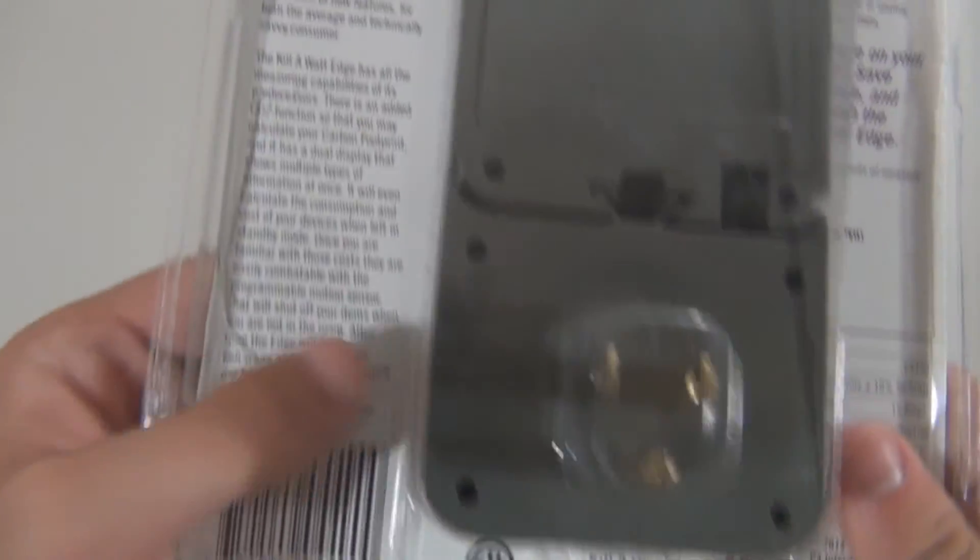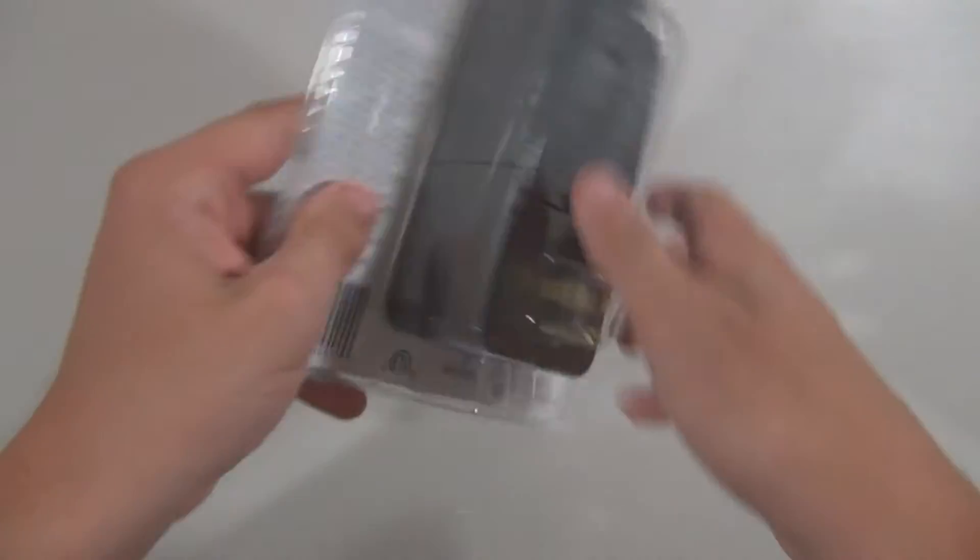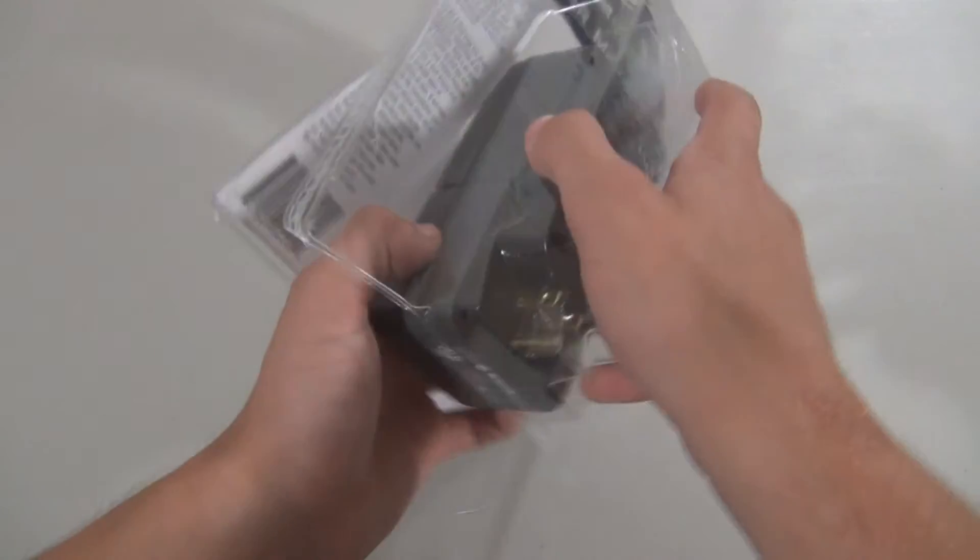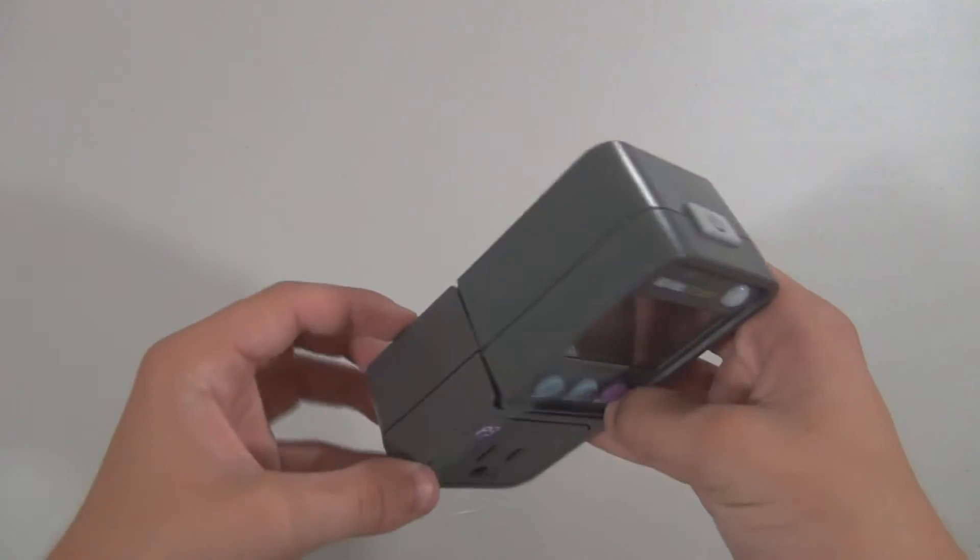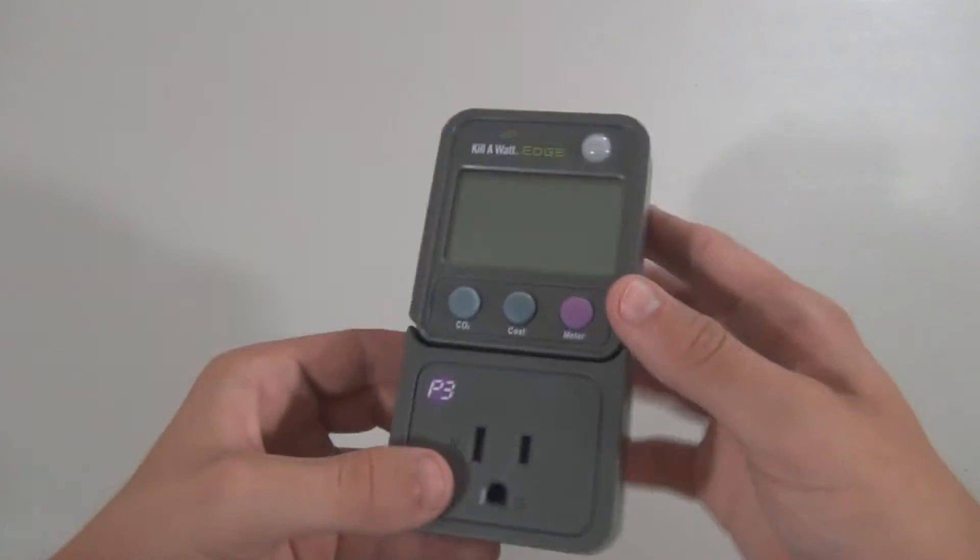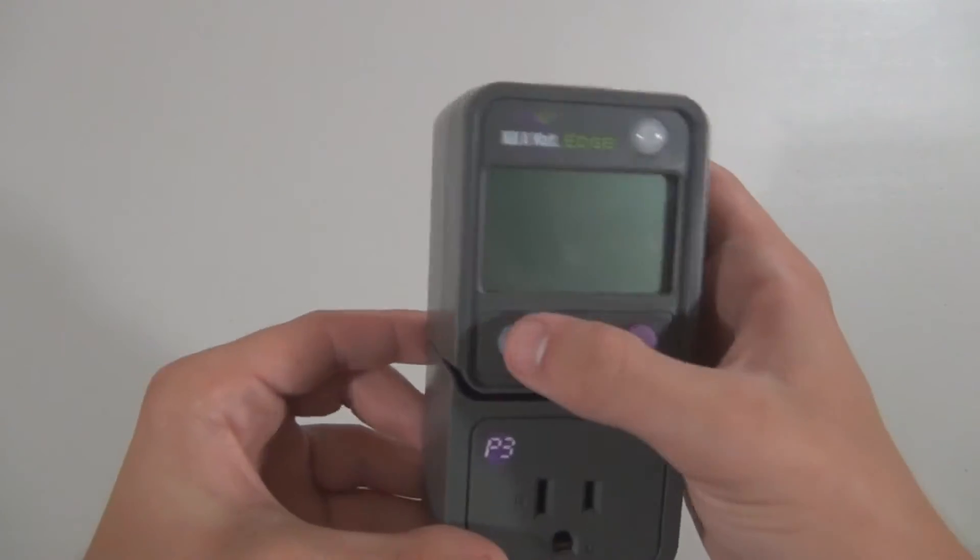It will also calculate how much money your devices are costing in real time, as well as how much money it will cost in a week, month, and year. There is an added motion sensor to detect movement, and I'll get more in-depth on this later. Finally, you can also view how much CO2 emissions you are outputting by the pound.